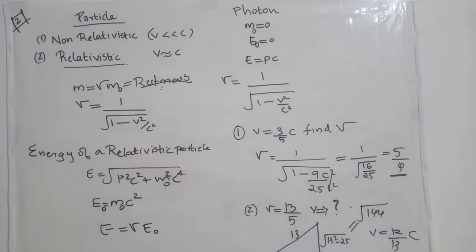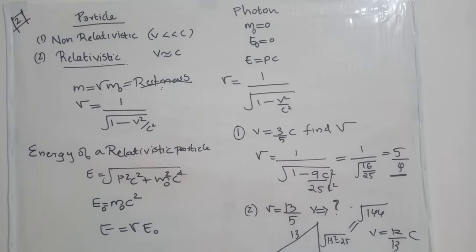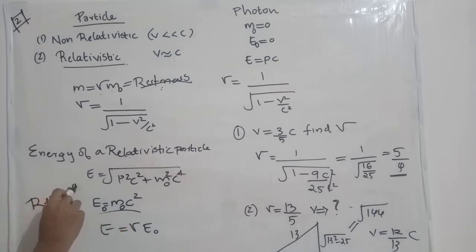What is the energy of a relativistic particle? The energy is E equals the square root of (P²C² plus M₀²C⁴), where E₀ is the rest mass energy, that is M₀C². We know that energy of a particle is E = MC². For a relativistic particle, the energy changes to the square root of (P²C² plus M₀²C⁴), where M₀C² is the rest mass energy — the energy when velocity equals zero.